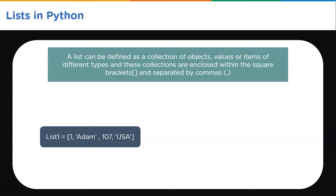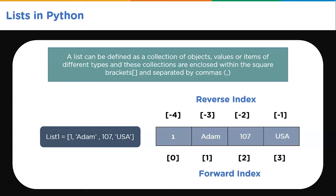We will create a list named list1: list1 = [1, 'Adam', 107, 'USA']. In lists, the first element is at index 0. So we have 1 at index 0, Adam at index 1, 107 at index 2, and USA at index 3. For reverse indexing, it starts with -1: USA is at -1, 107 at -2, Adam at -3, and 1 at -4. We will explore lists with various examples in Jupyter Notebook in a while.